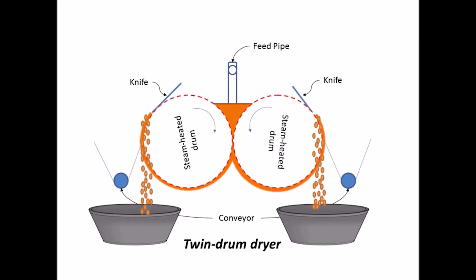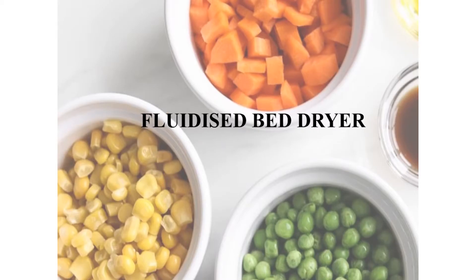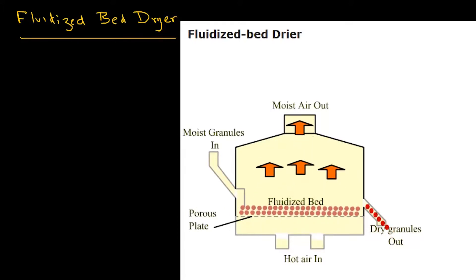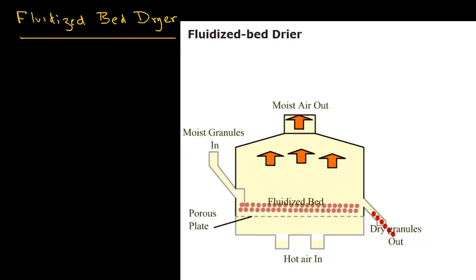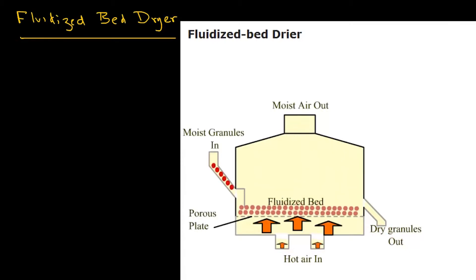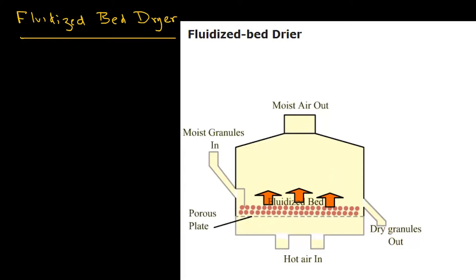The drum dried product is scraped by a doctor blade or knife. The fluidized bed dryer is often used when solid foods are of smaller size and easier to fluidize. The food is placed on a porous plate so that air can be blown from underneath. The velocity of air is such that the food particles are lifted slightly from the porous plate during the drying process.